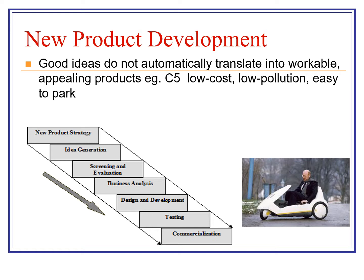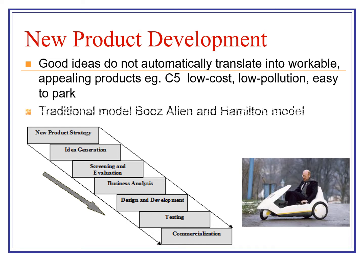Check out different books and you'll see different words in different order, but it's the same thing. The first stage is idea generation — come up with ideas. Then you weed some out and think it through. Then you have a business analysis, then you design, develop, and bring out new products, test them, and then put it into commercialization. That's the traditional model that Booz Allen and Hamilton, the consultants, would adhere to.